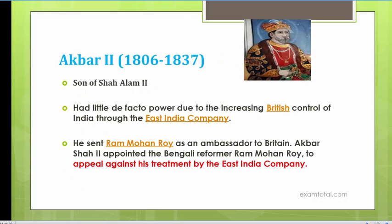After the death of Shah Alam II in 1806, the next Mughal ruler was Akbar II, who ruled from 1806 to 1837. He was just a nominal ruler with very little de facto power due to the increasing British control of India through the East India Company. Like his father, he received a pension from the East India Company.